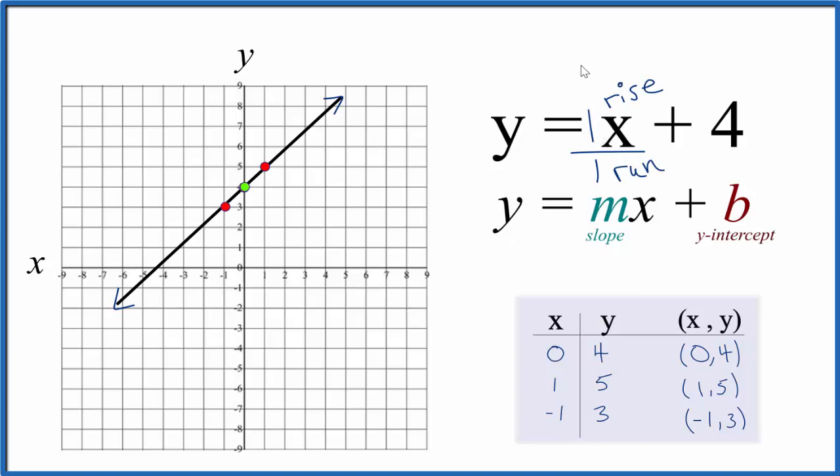We'll rise 1 and then go over 1. So we go to the y-intercept. We rise 1 and go over 1. We rise 1 from there, over 1, and you can see all of these points. They're on the line y equals x plus 4.